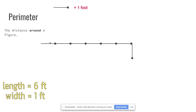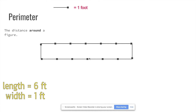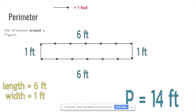We have a length of six feet and a width of one foot. Remember, we're not just adding the top and right sides — we also add the bottom and left. So it's not just six plus one; it's six plus one plus six plus one. Counting that up: seven, eight, nine, ten, eleven, twelve, thirteen, fourteen feet.